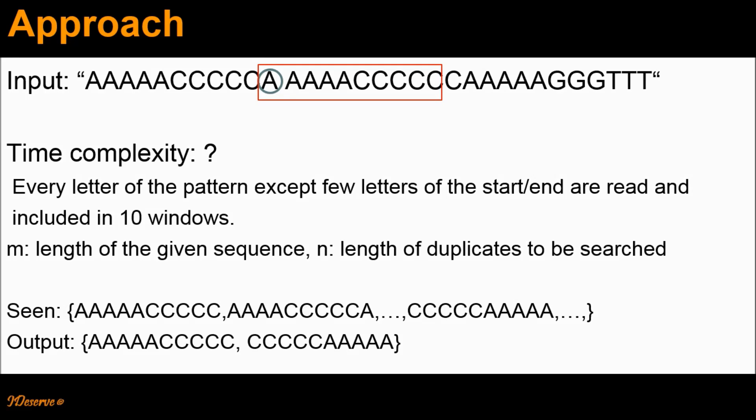Then the time complexity for this approach would be O(mn). When we say that time complexity is O(mn), we are assuming that we can check for duplicates in the seen set in O(1). We can implement that seen set using a hash map.